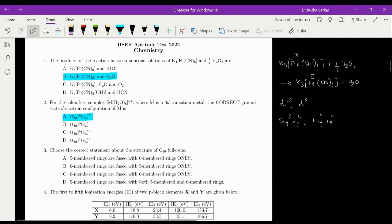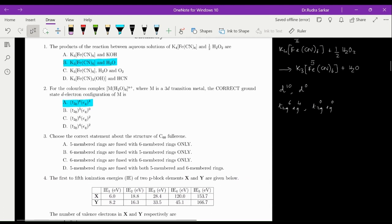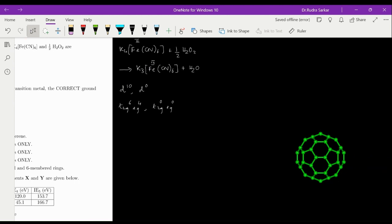Choose the correct statement about the structure of C60 fullerene. The options given to us are 5 membered rings are fused with 6 membered rings only, 6 membered rings are fused with 5 membered rings only, 6 membered rings are fused with 6 membered rings only, 5 membered rings are fused with both 5 membered and 6 membered rings. Now, if you look at the structure, what we find is that the 5 membered rings are fused with only the 6 membered rings from each side.